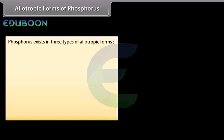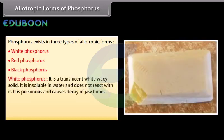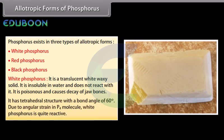Phosphorus exists in three types of allotropic forms: white phosphorus, red phosphorus, and black phosphorus. White phosphorus is a translucent white waxy solid; it is insoluble in water and does not react with it. It is poisonous and causes decay of jaw bones. It has a tetrahedral P4 structure with a bond angle of 60°. Due to angular strain in the P4 molecule, white phosphorus is quite reactive.